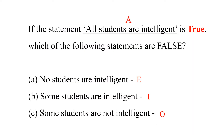Let's assign the other letters E, I, and O to the statements. Option A, 'no students are intelligent,' is universal negative, so it's assigned the letter E. Option B, 'some students are intelligent,' is particular affirmative, and is assigned the letter I. And option C, 'some students are not intelligent,' is particular negative, and is assigned the letter O.